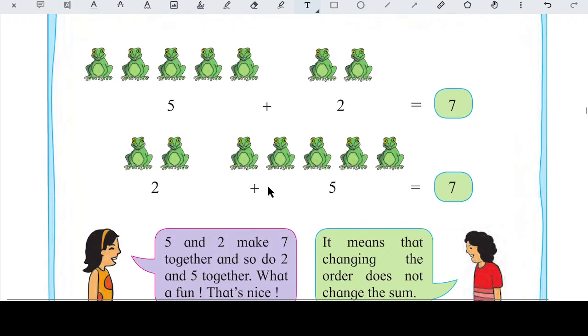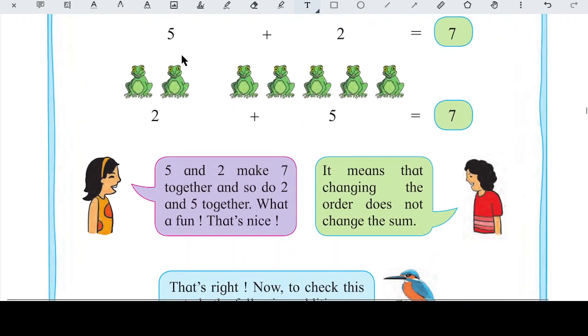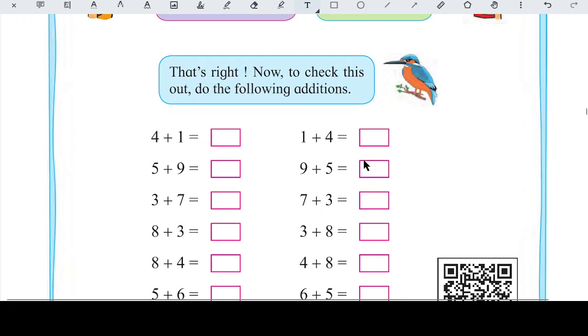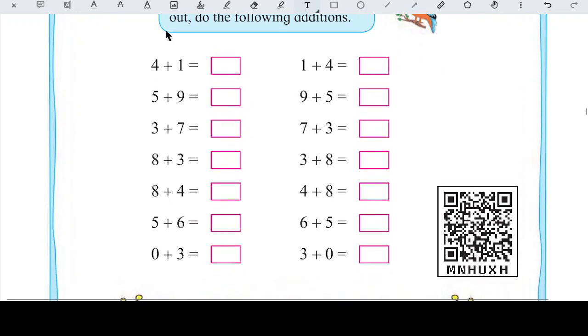To sum matlab hota hai addition, okay, yeh addition ka dusra word hai sum. So yeh keh raha hai iska matlab yeh hai ki agar humne change kar diya, jaise yahan pe 5 ki jagah 2 likh diya aur 2 ki jagah 5 likh diya, to bhi counting change nahi hoga, angels. Jo answer hai wo change nahi hoga. 5 plus 2 bhi 7 rahega, 2 plus 5 bhi 7 rahega. Waise hi angels, 1 plus 2 bhi 3 hoga aur 2 plus 1 bhi 3 hi rahega, right? Next, that's right. Now to check this out, do the following additions.